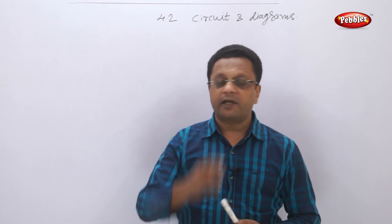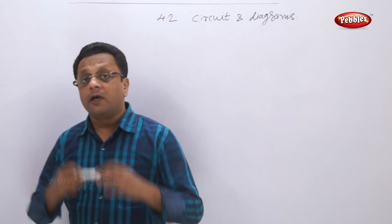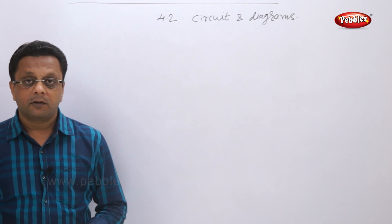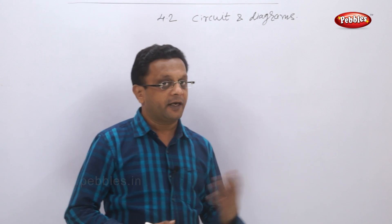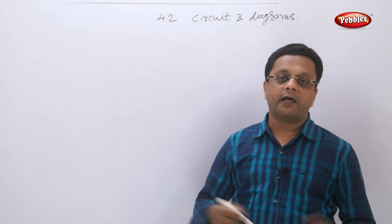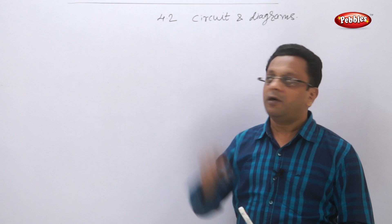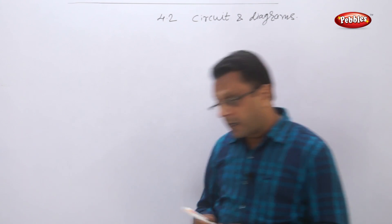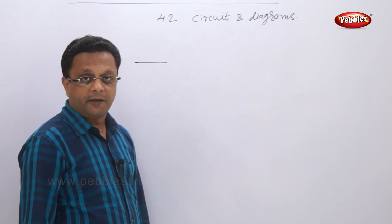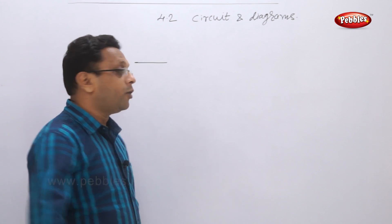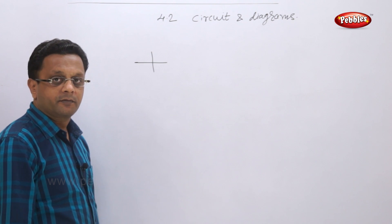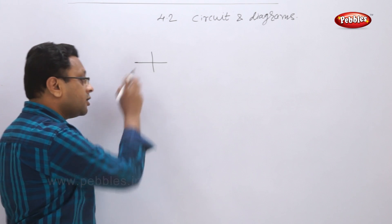Now let us see one circuit diagram. To draw circuit diagrams, first of all we should know the different symbols used. For conductors — that is, the conducting wires — we use straight lines or different lines. Suppose this wire is going from here to here, but it is not touching.